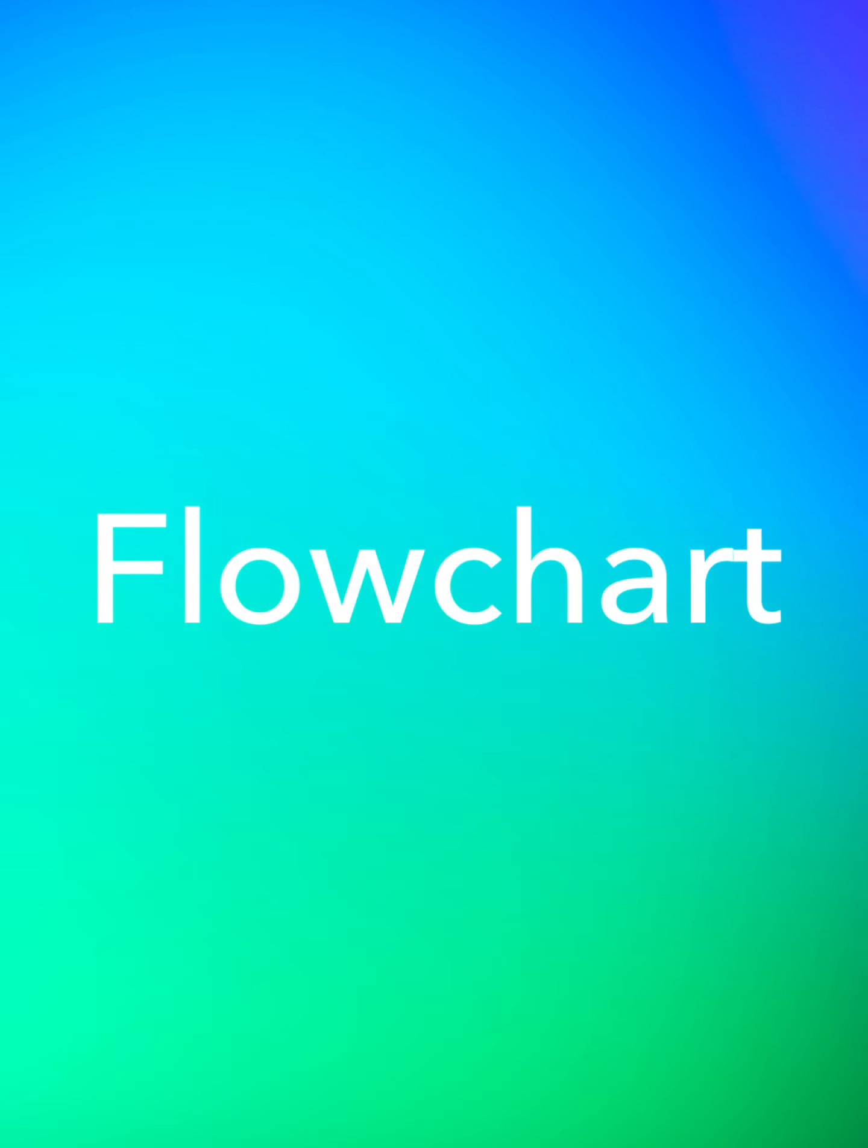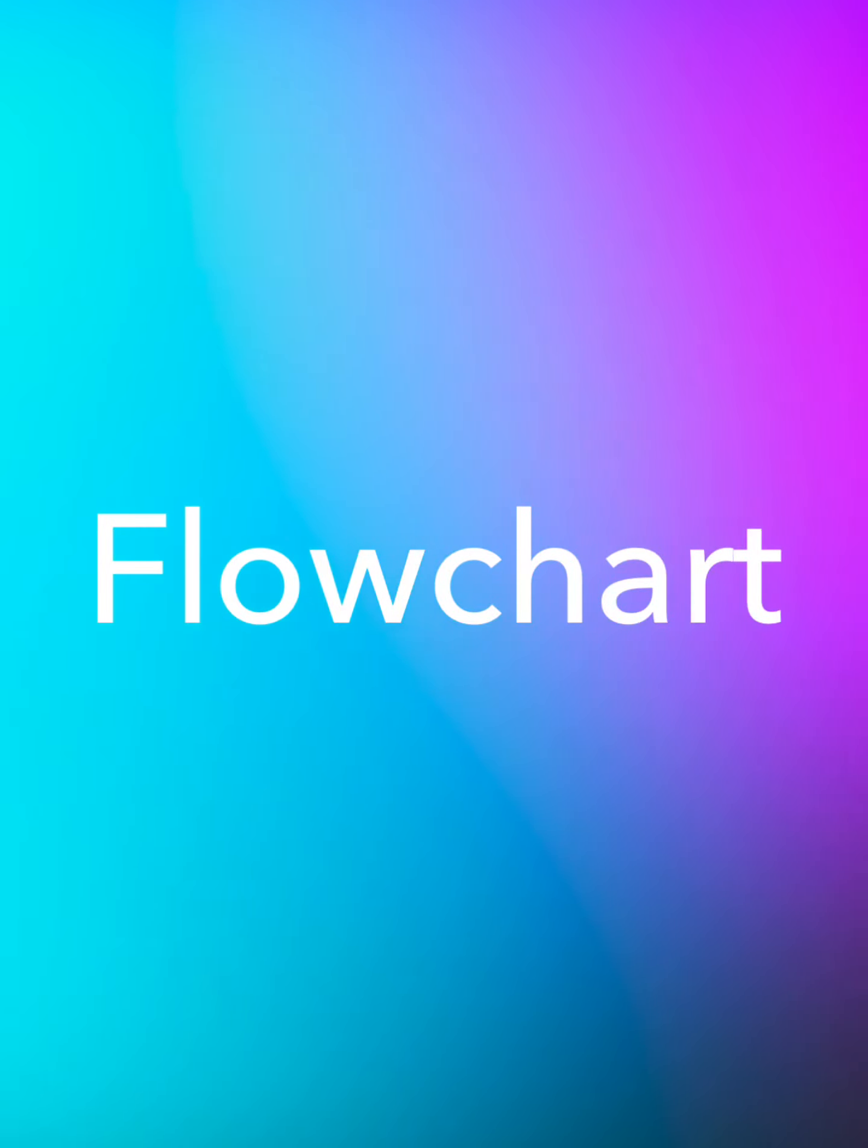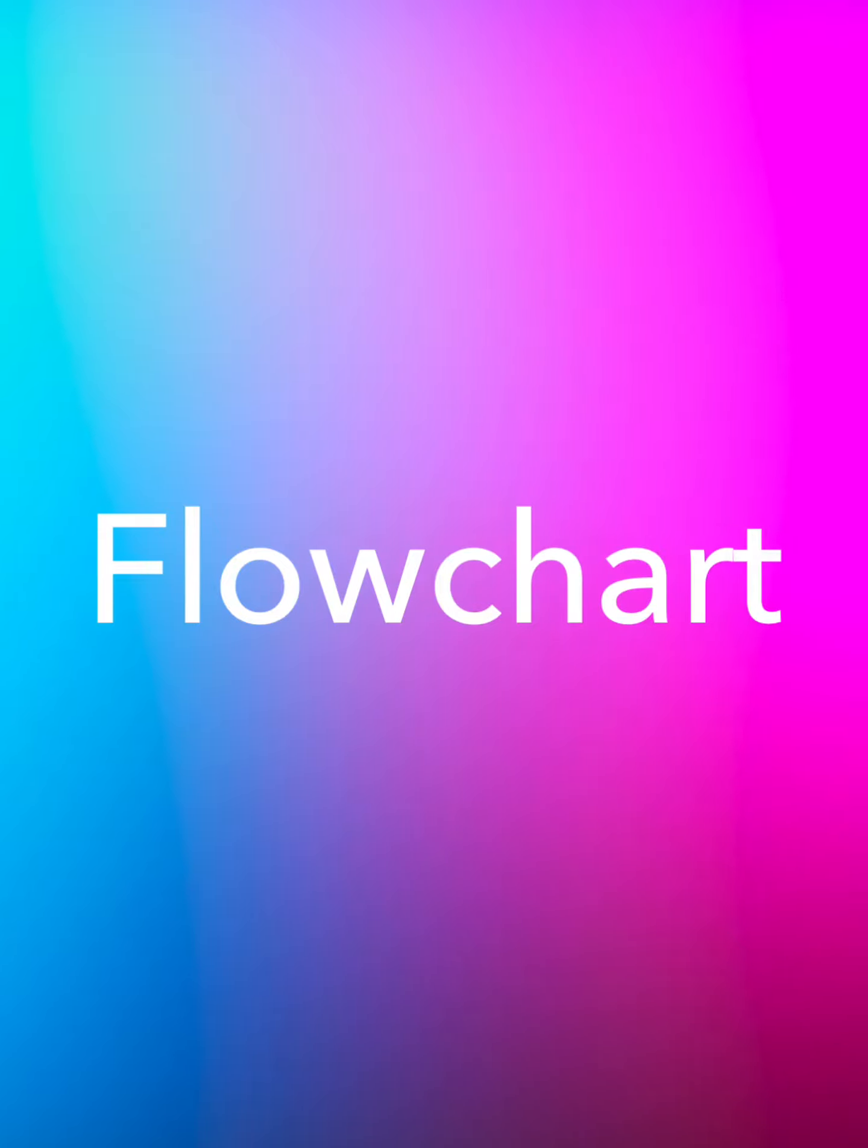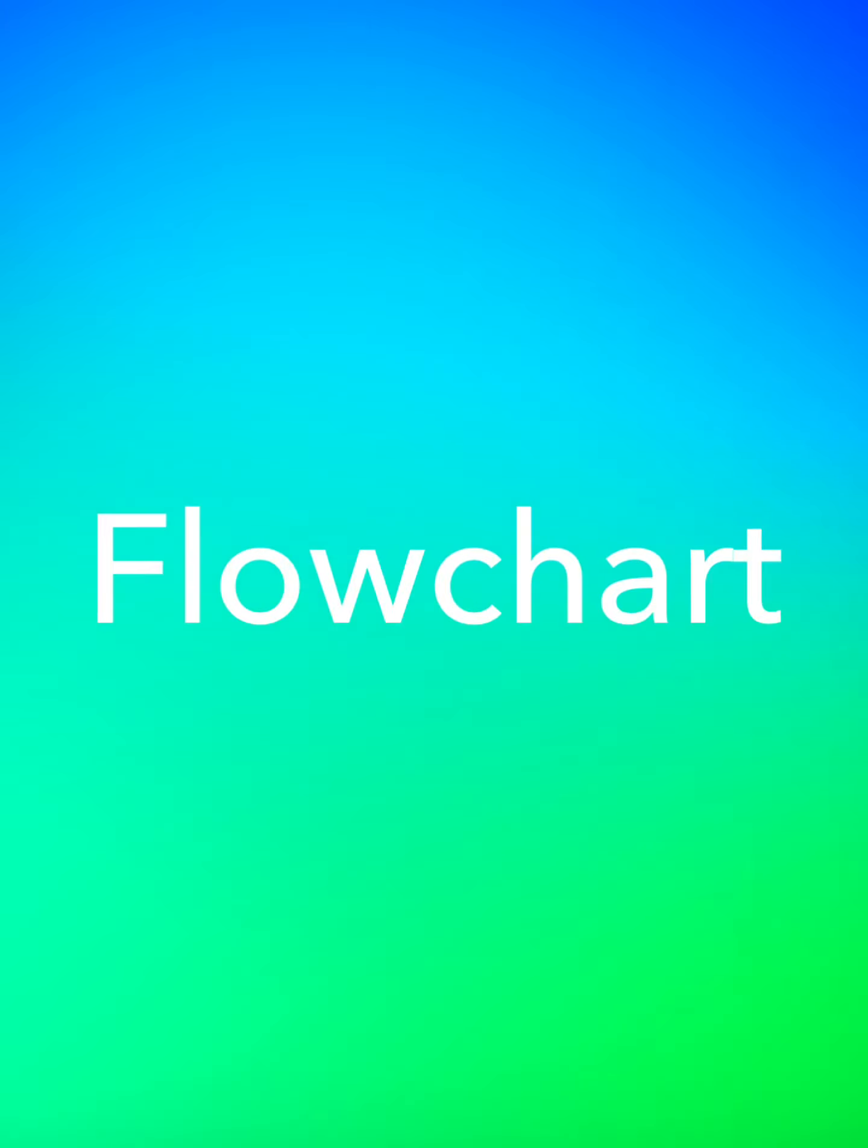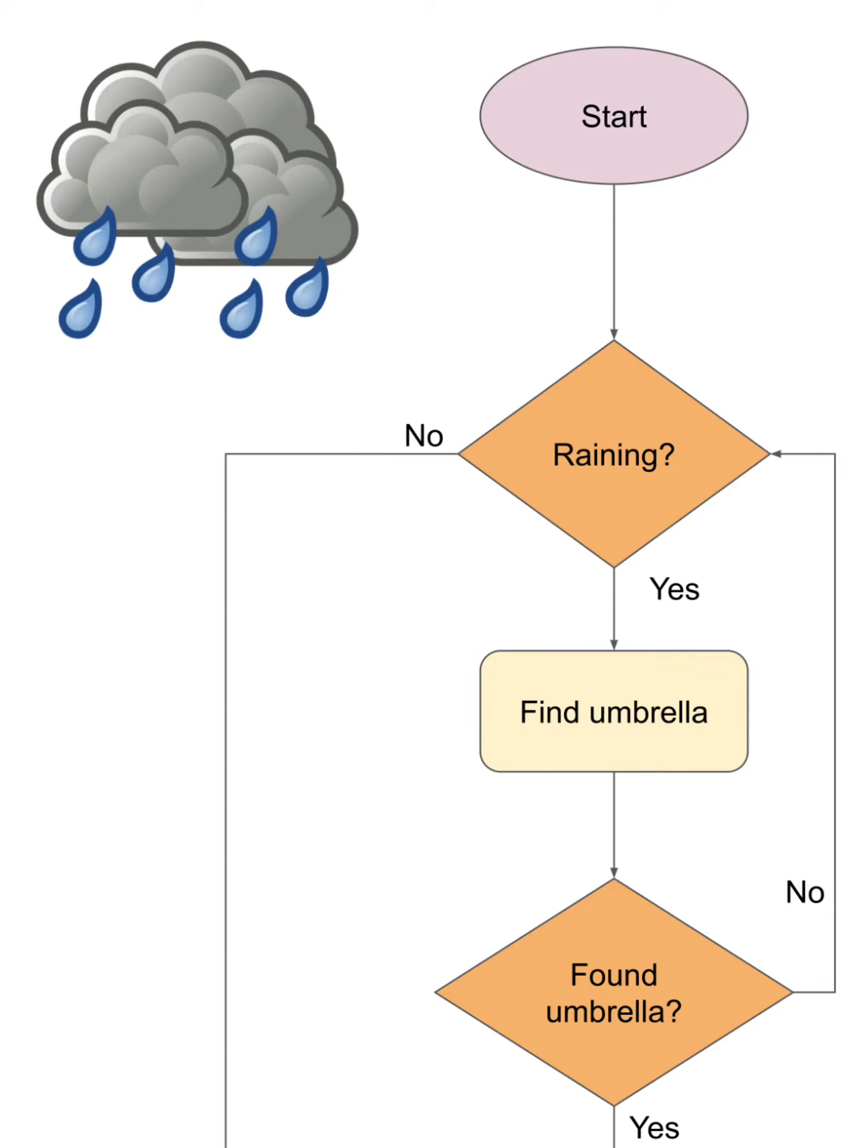You're already pretty good at writing an algorithm out as a list of instructions such as a recipe. So we're going to look at flowcharts which is a way of representing an algorithm as a series of instructions but using symbols. Here is a flowchart very apt for the weather at the moment about whether to take an umbrella out with you on a walk.